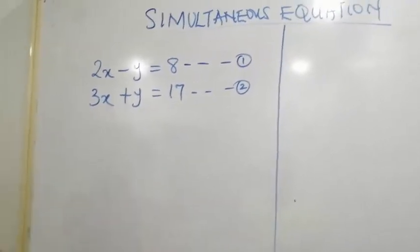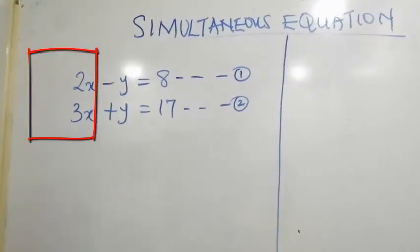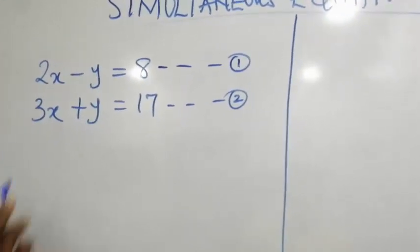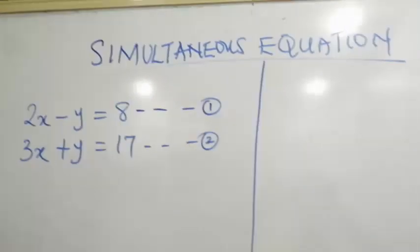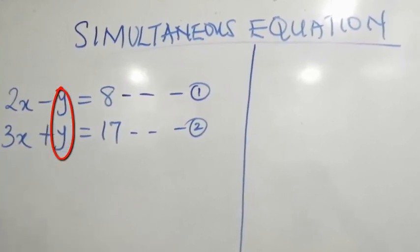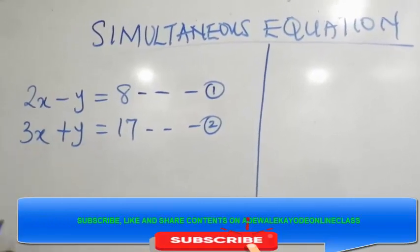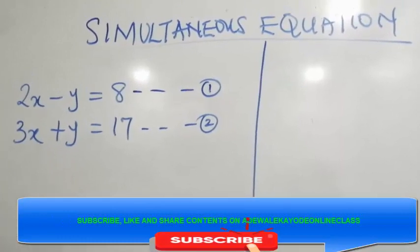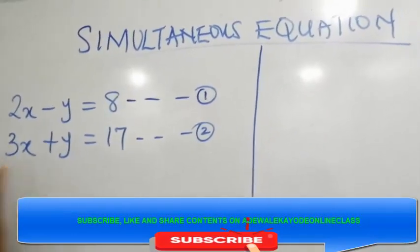For instance, if you look at this equation. On equation 1, the coefficient of x is 2. On equation 2, the coefficient of x is 3. On equation 1, the coefficient of y is minus 1. On equation 2, the coefficient of y is plus 1. So it is easy to eliminate on y because the coefficient has the same thing, but only the signs are different.